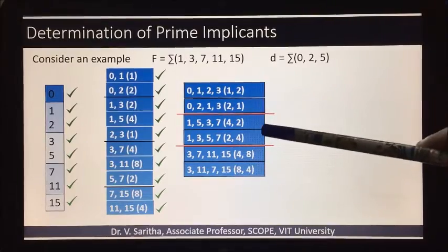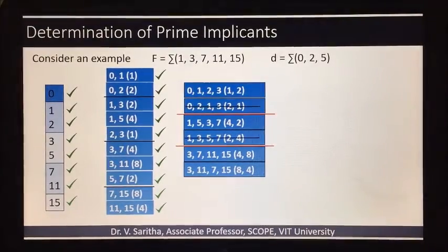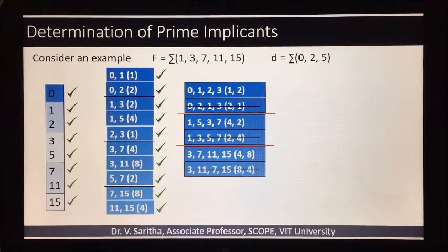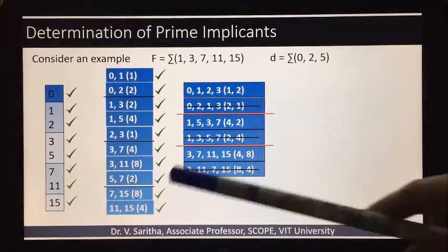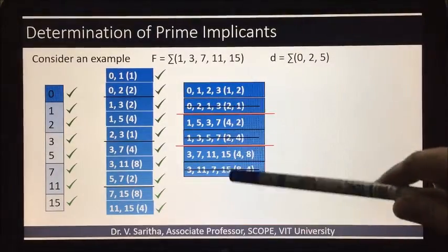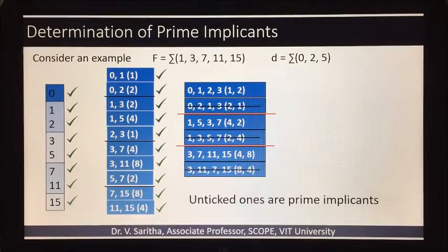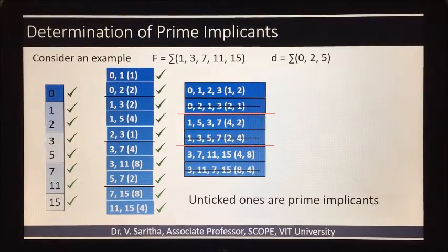Now you can see these are duplicates of each other, so we will remove the duplicate. So 3 quads. We have only 3 quads as prime implicants actually, and ticked ones are called prime implicants.